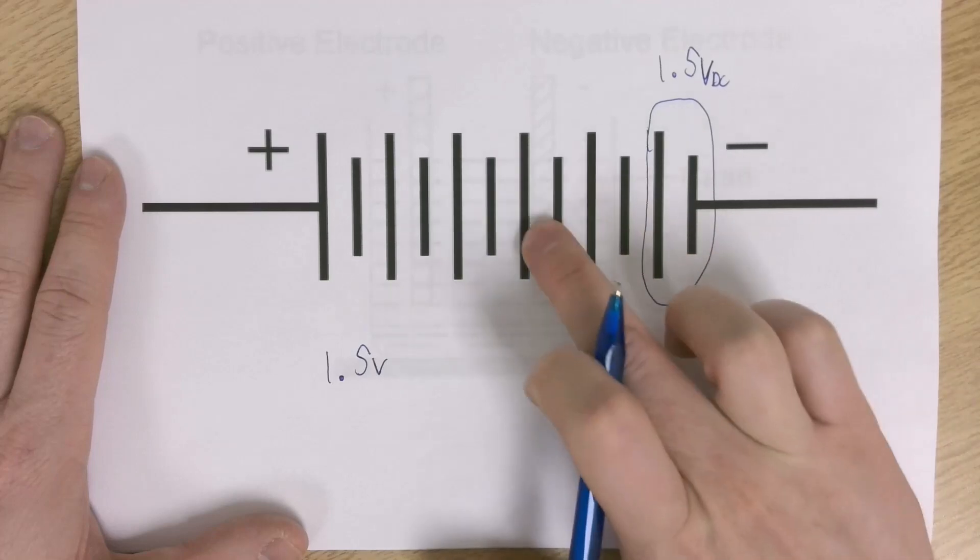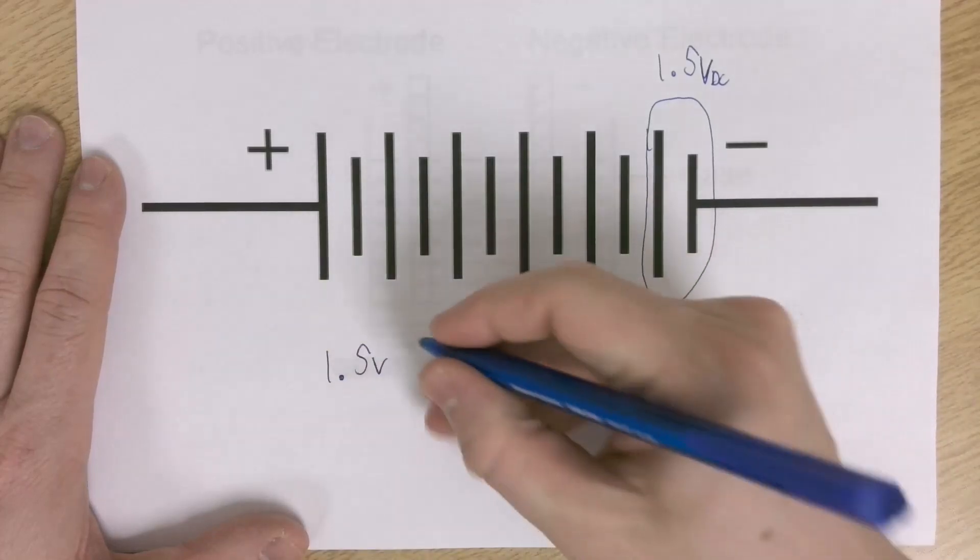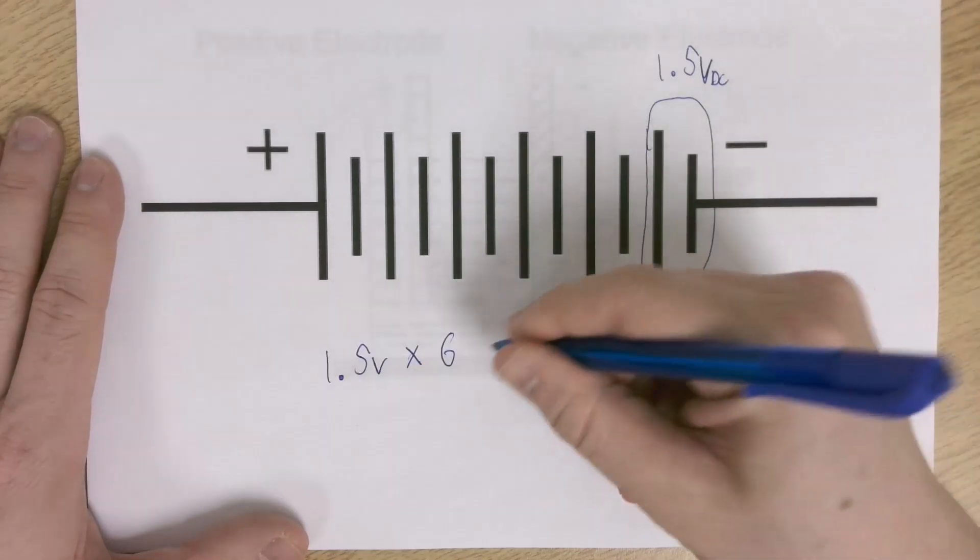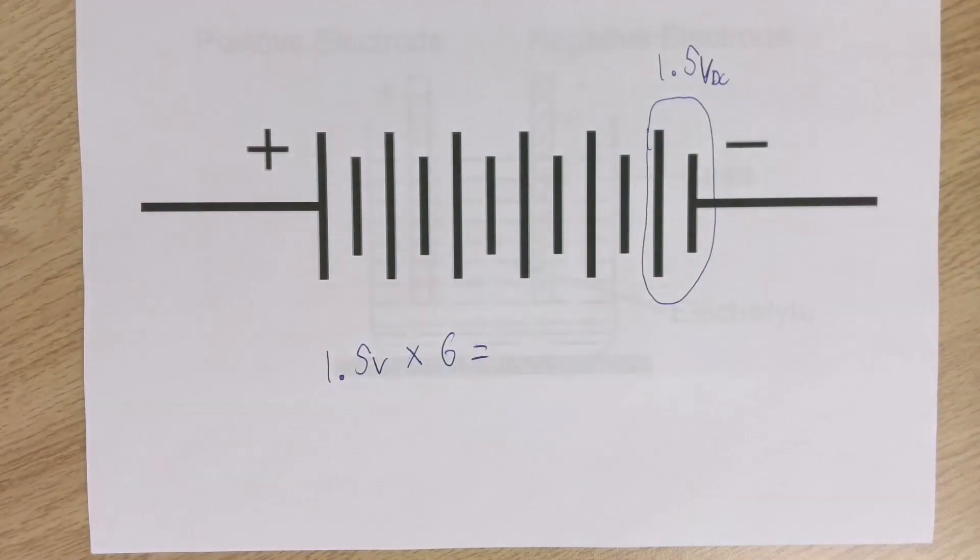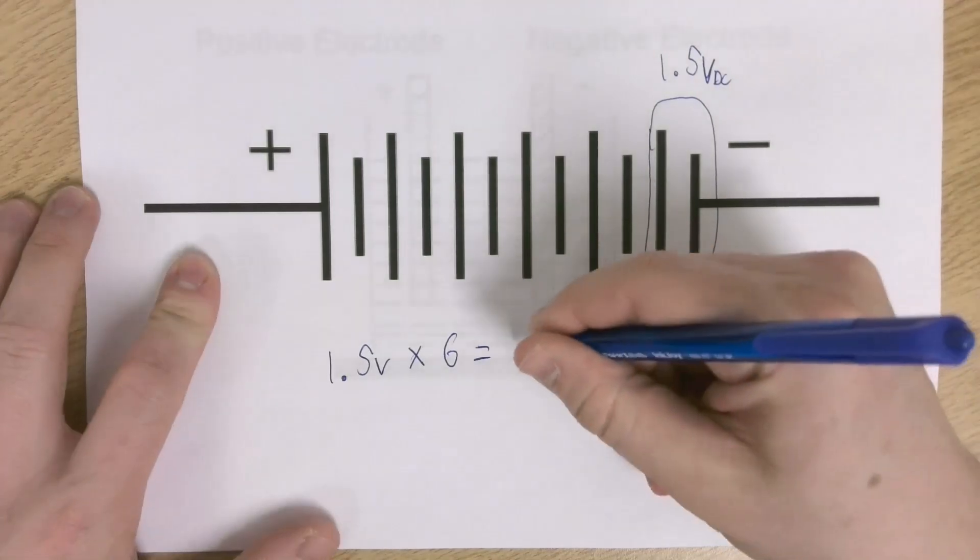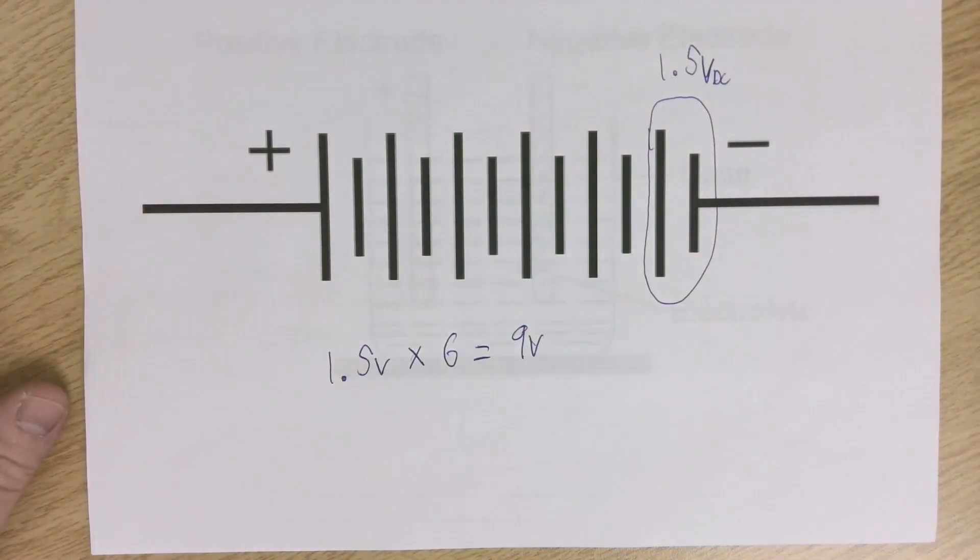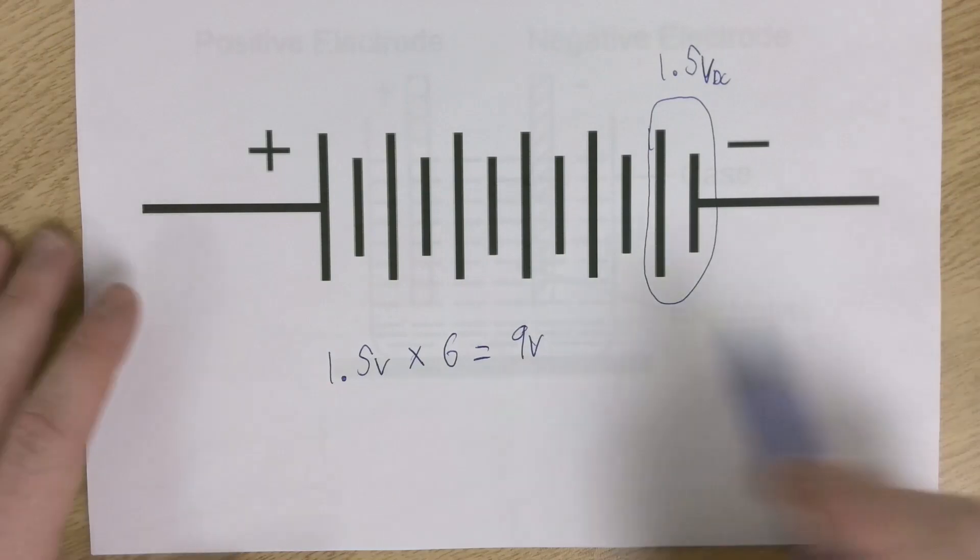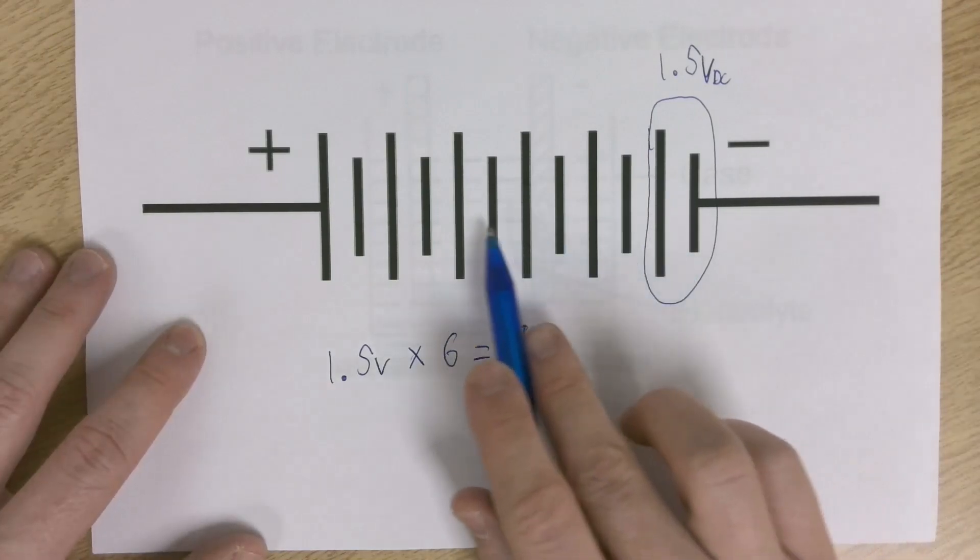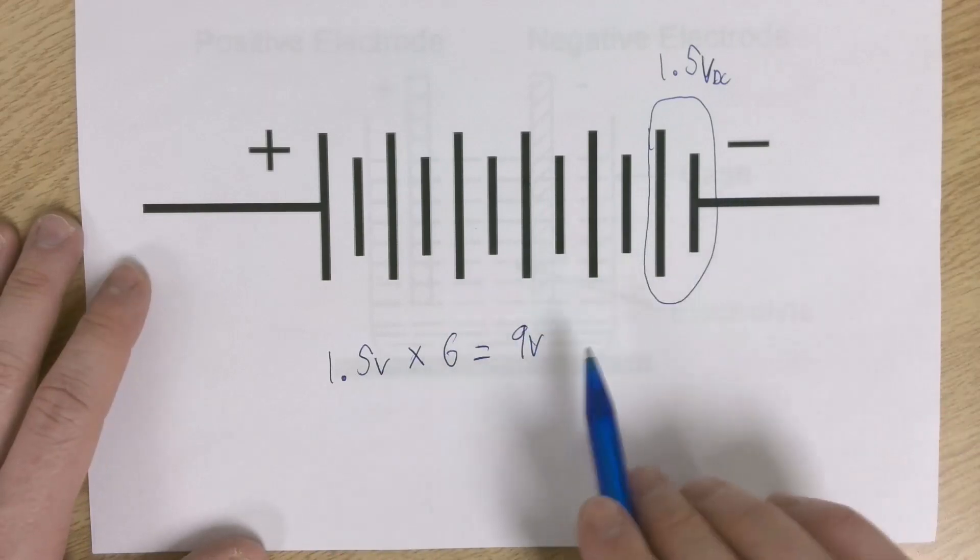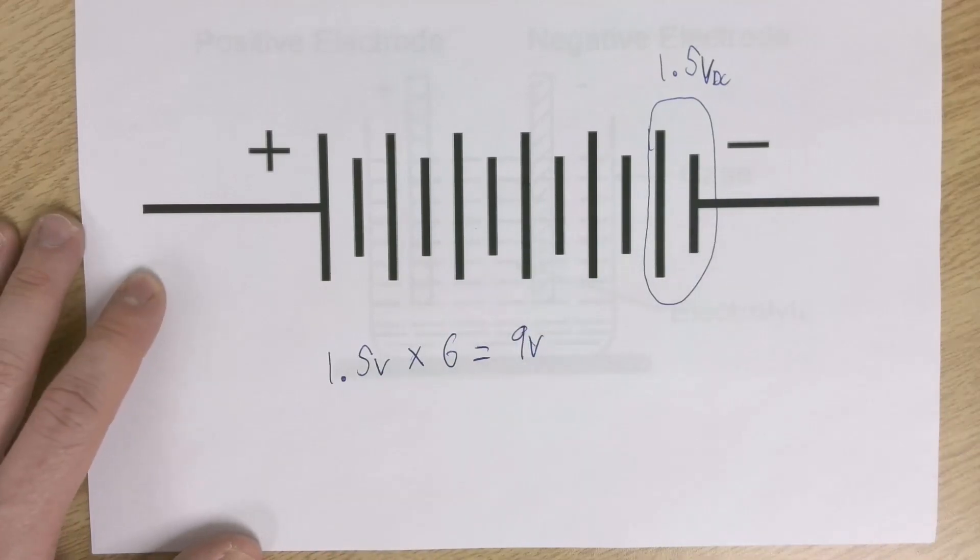So 1, 2, 3, 4, 5, 6. 1.5 volts times 6 cells equals 9 volts. Because they're connected in series, we have 6 voltage rises. So our total voltage for this battery would be 9 volts, for example.